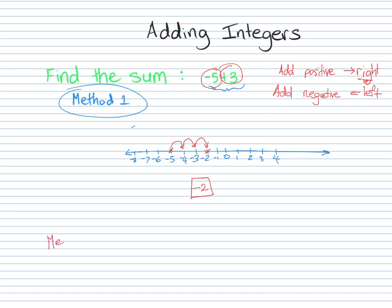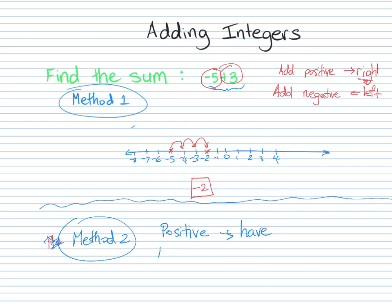In the money method, method 2, I think of everything that is positive as money that I have. And I think of everything that is negative as money that I owe to someone.